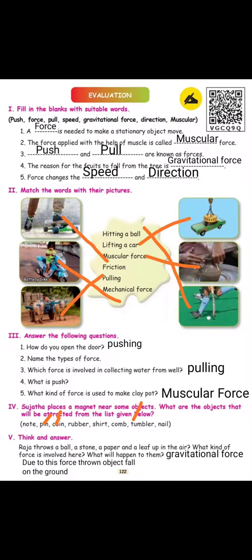First question is fill in the blanks. You have options and you can select the answers. First question is: a dash is needed to make a stationary object move. What is the answer? The answer is force.